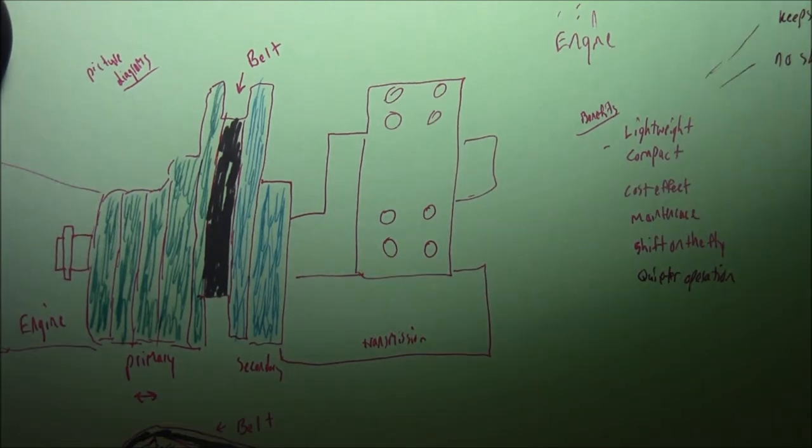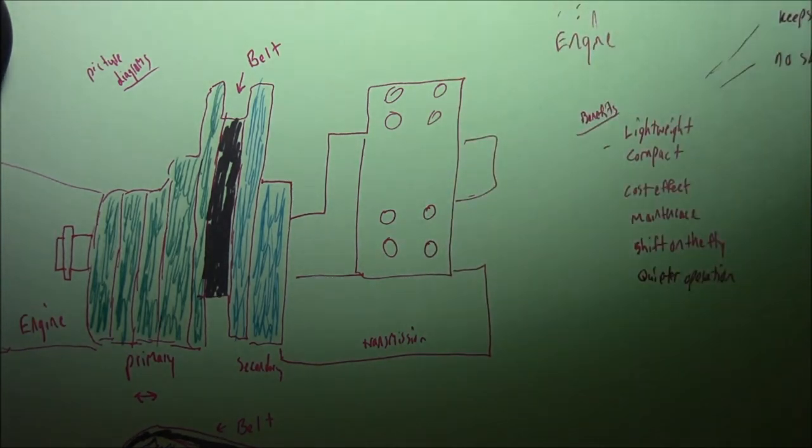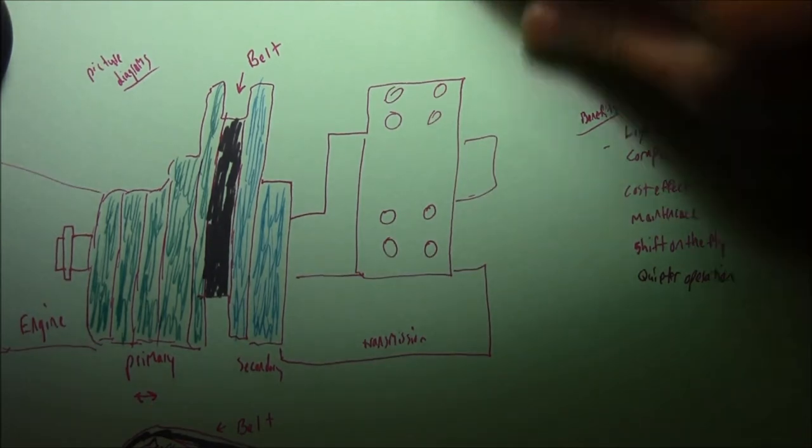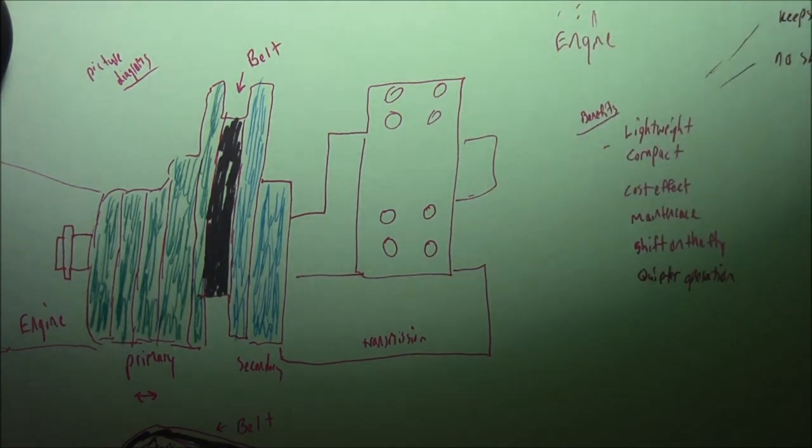Benefits of having a continuous variable transmission: it's lightweight, compact, cost-effective, low maintenance, shifts on the fly, and is a quieter operation. The downside is it usually uses a steel belt and the steel belt doesn't last that long sometimes.